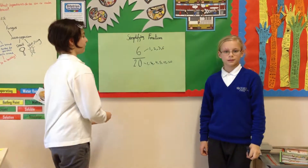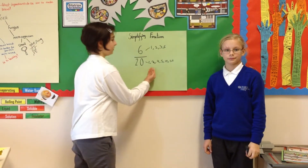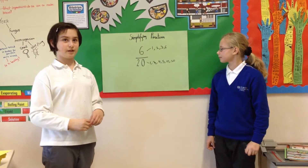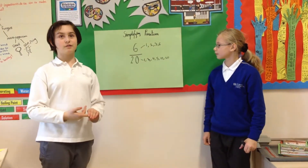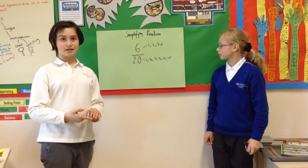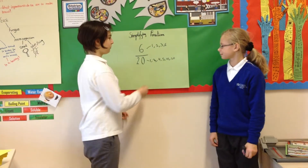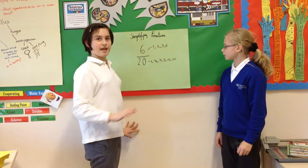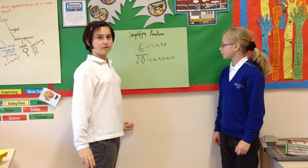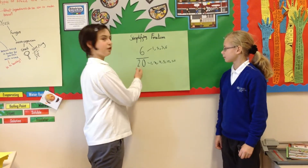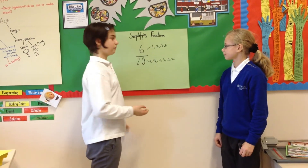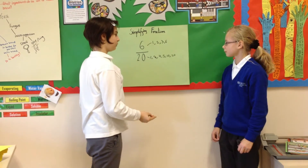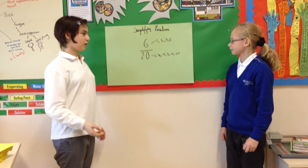Great, now that you've found the factors of each one, you need to find the greatest common factor. So you look at both. They both have one, but we can't use one because it would just equal itself. So two — two is the same, which makes it the greatest common factor.